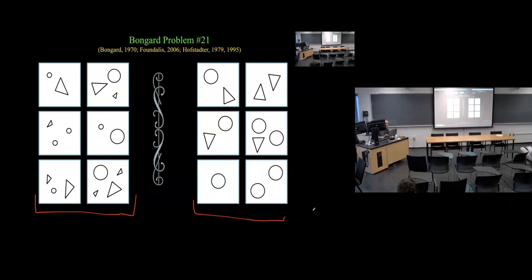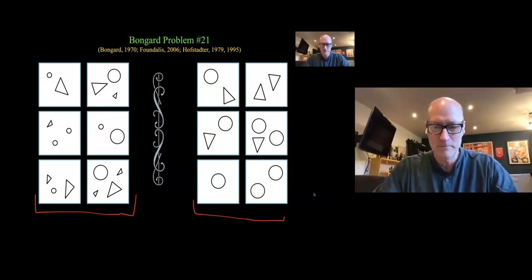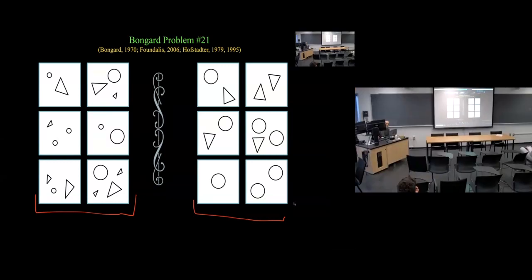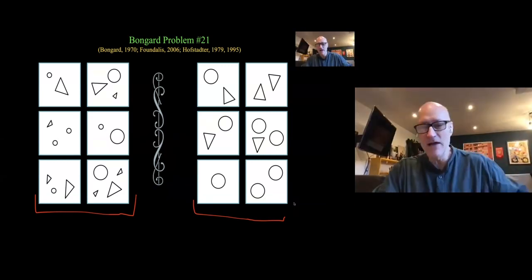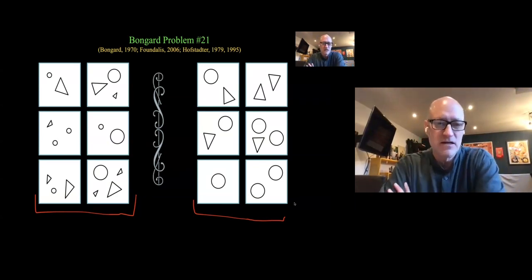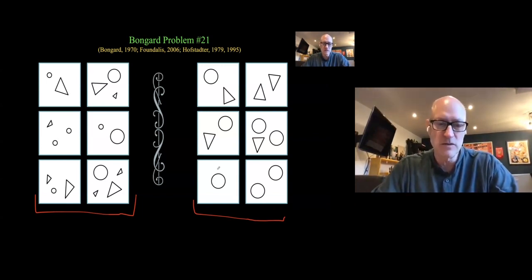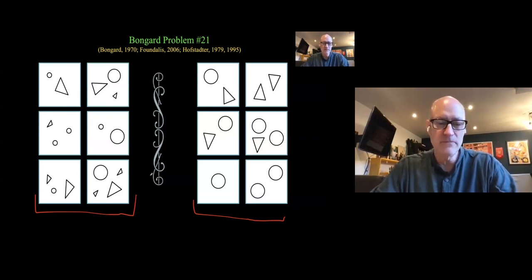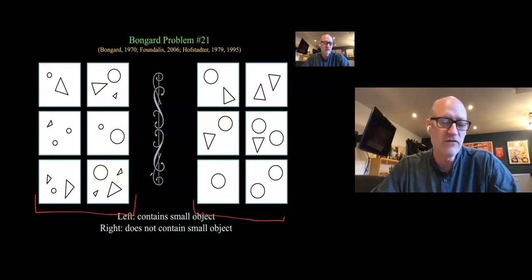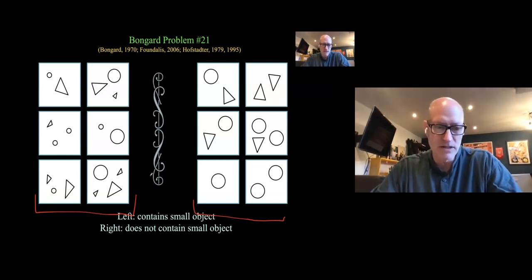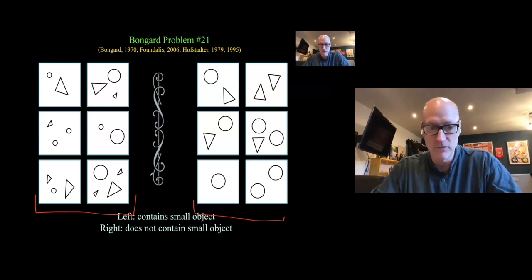Somebody should be able to get it — this should be an easy one. Christian has a fancy way of describing this: all of the objects on the right side are the same size, and there's variation in sizes on the left. You could also say the left side contains small objects and the right side does not, but Christian is already thinking more relationally, which is what we're interested in.